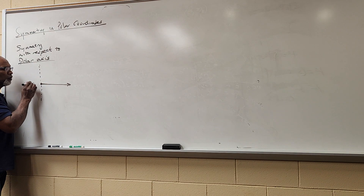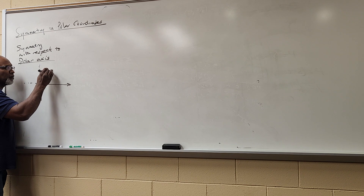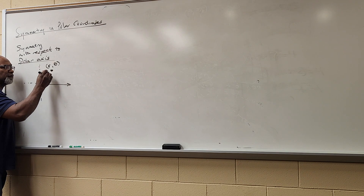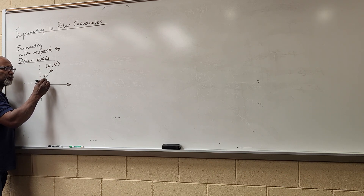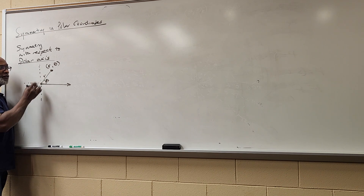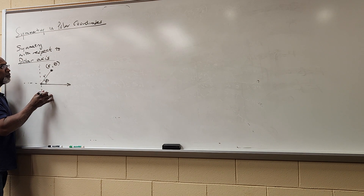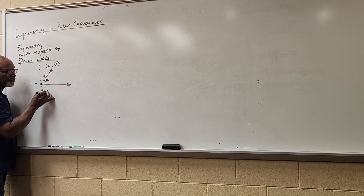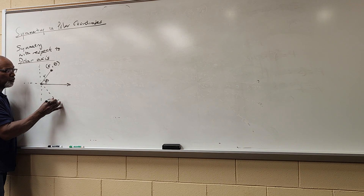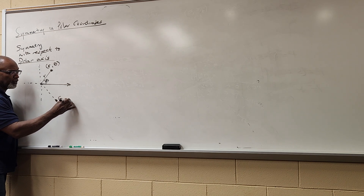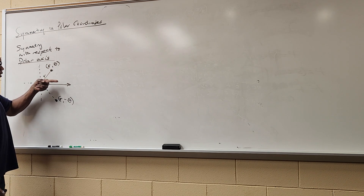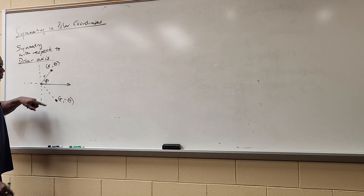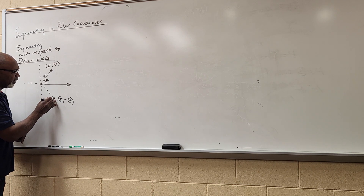Symmetry with respect to the polar axis means: if I have some point defined as (r, θ), then symmetry with respect to the polar axis means that the point (r, -θ) is also on the graph. You can reflect across the polar axis and you'll get the point (r, -θ).